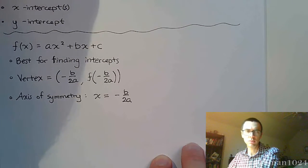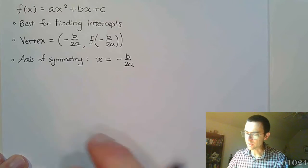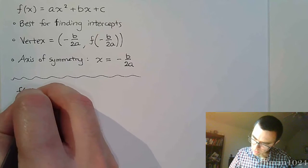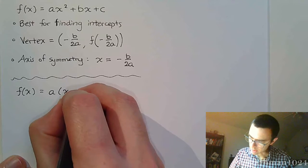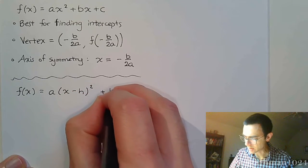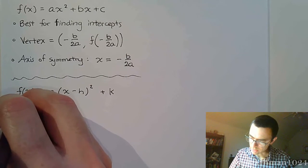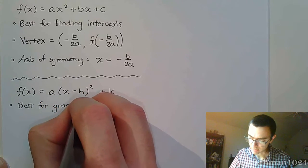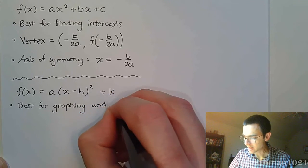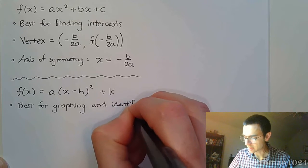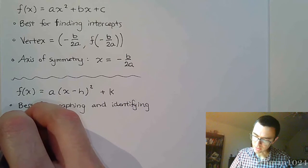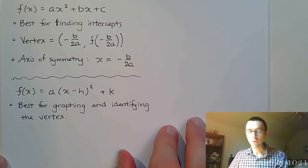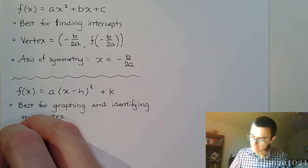Now for your vertex form, so f(x) is equal to a times (x - h)² plus k, this guy is best for graphing. It's best for graphing and identifying the vertex. So if you guys remember the graphics that we did with nonlinear functions before, you should understand why it's easy to find the vertex.